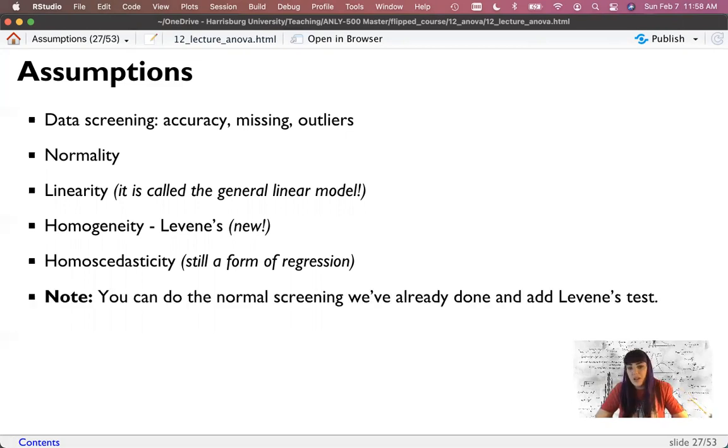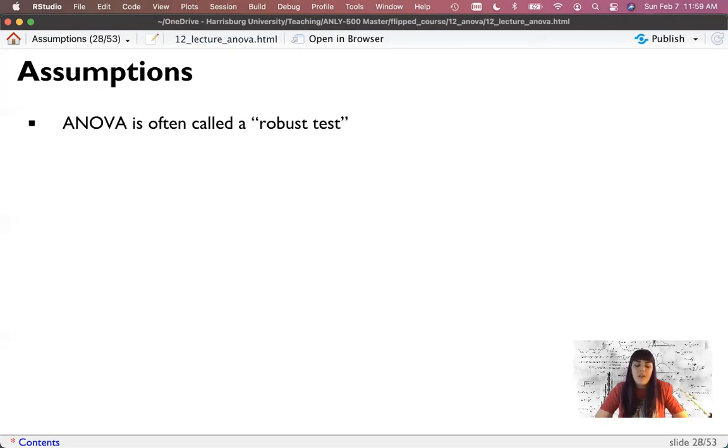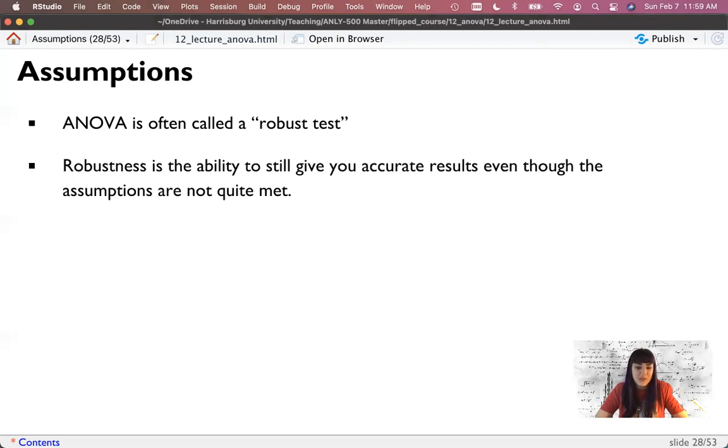So we can do the normal screening we've done and just add Levene's test. Now, the package we're going to use for the ANOVA function automatically gives you Levene's, which is really nice. But either way, ANOVA is considered robust. Robustness is the ability to give me a result that still means something, even if the assumptions aren't quite met. So even if we don't quite have homogeneity, ANOVA is fairly robust to violations. I would say ANOVA is more robust to normality than it is to homogeneity. And so I would say put a little bit more focus on checking for homogeneity.